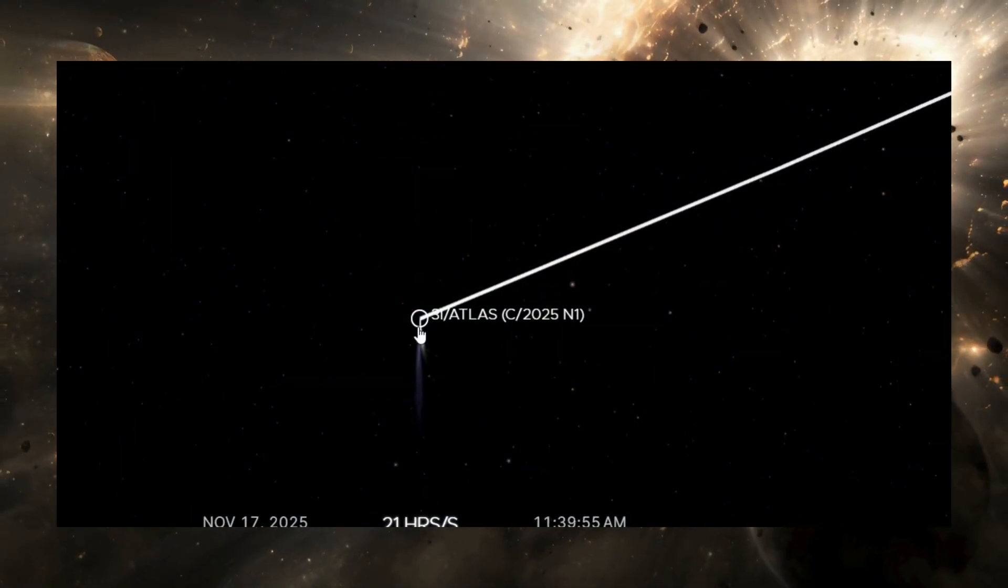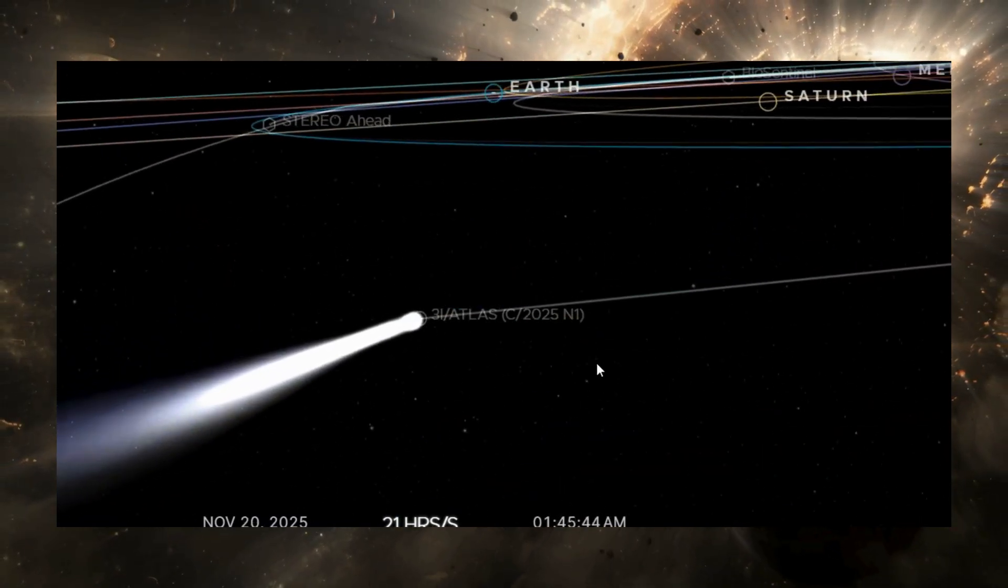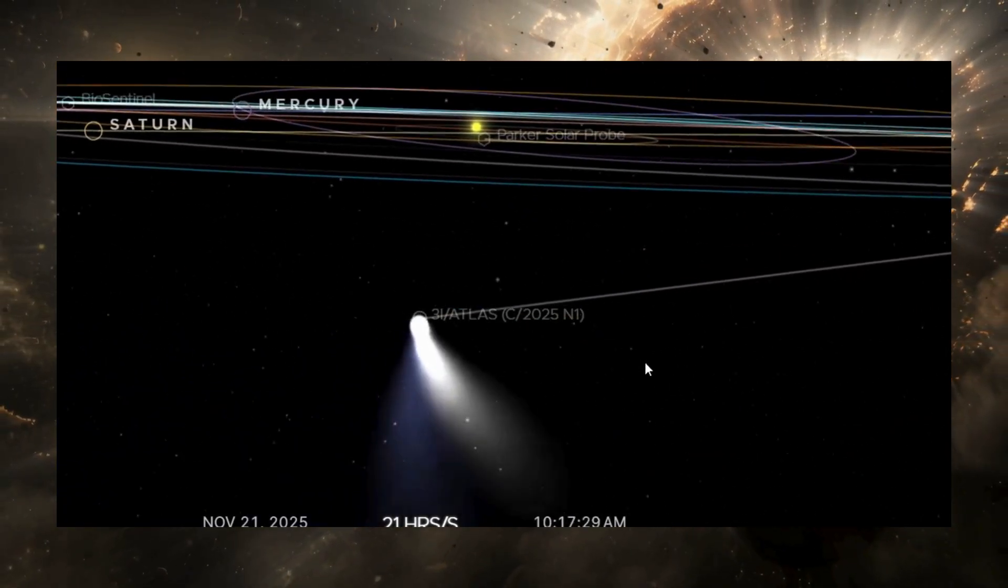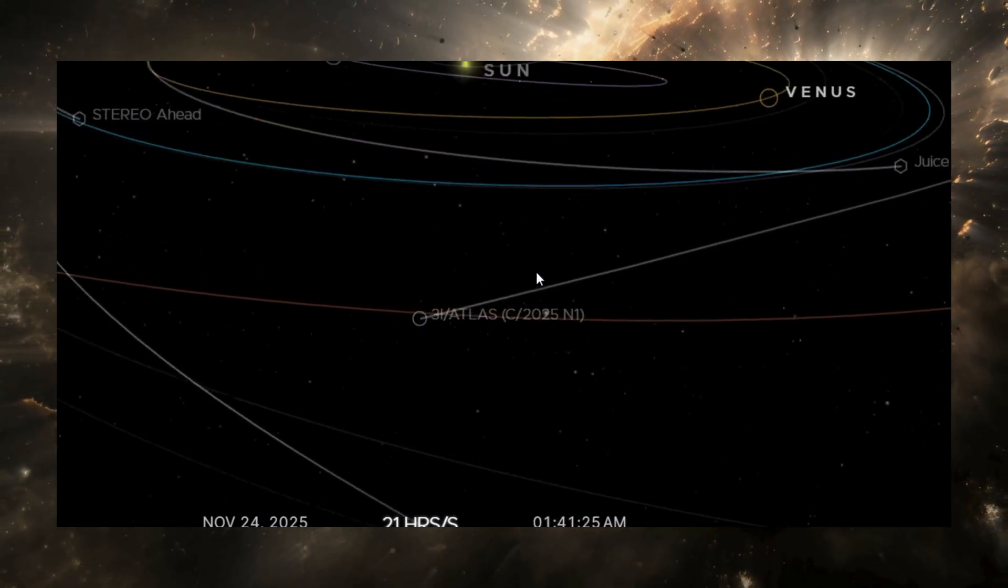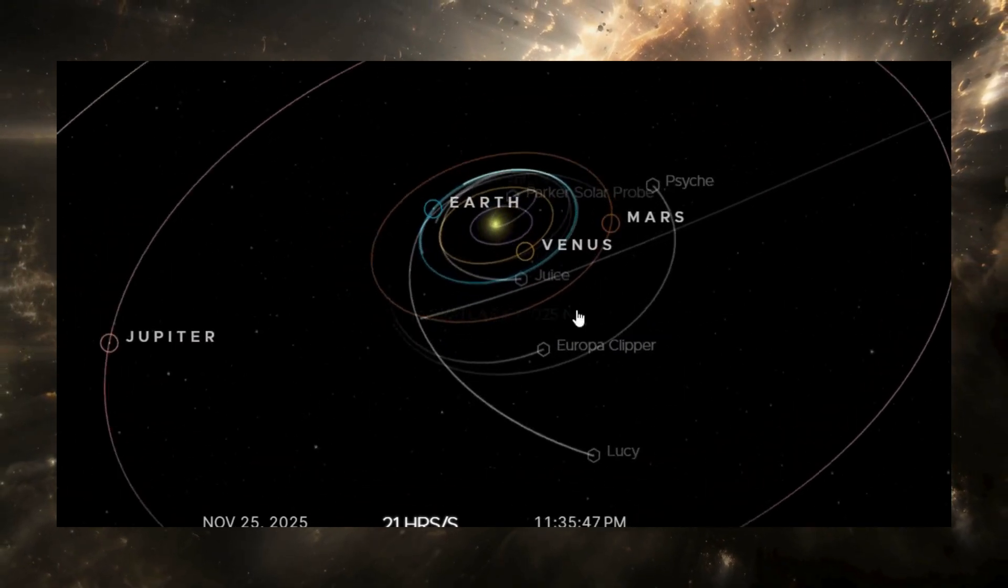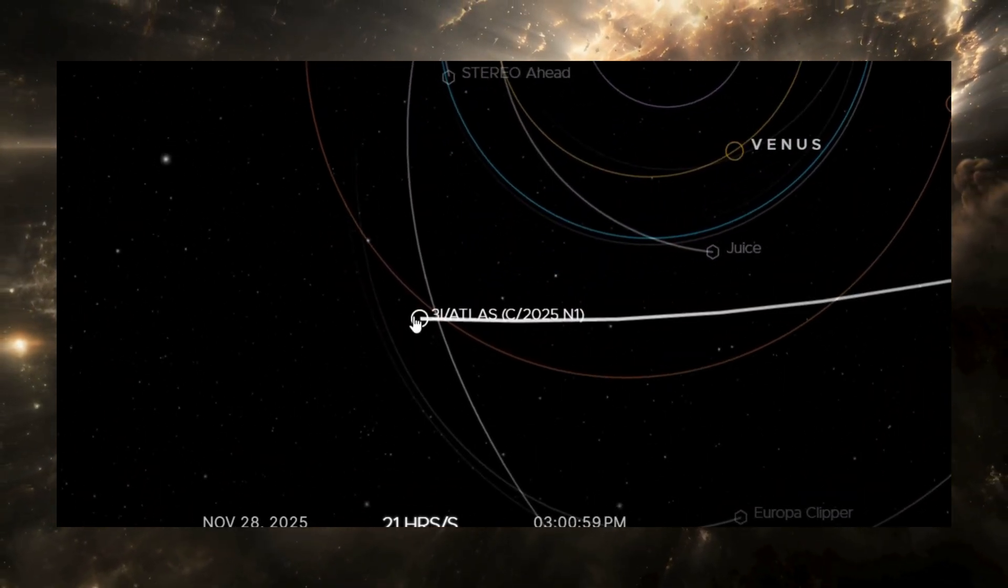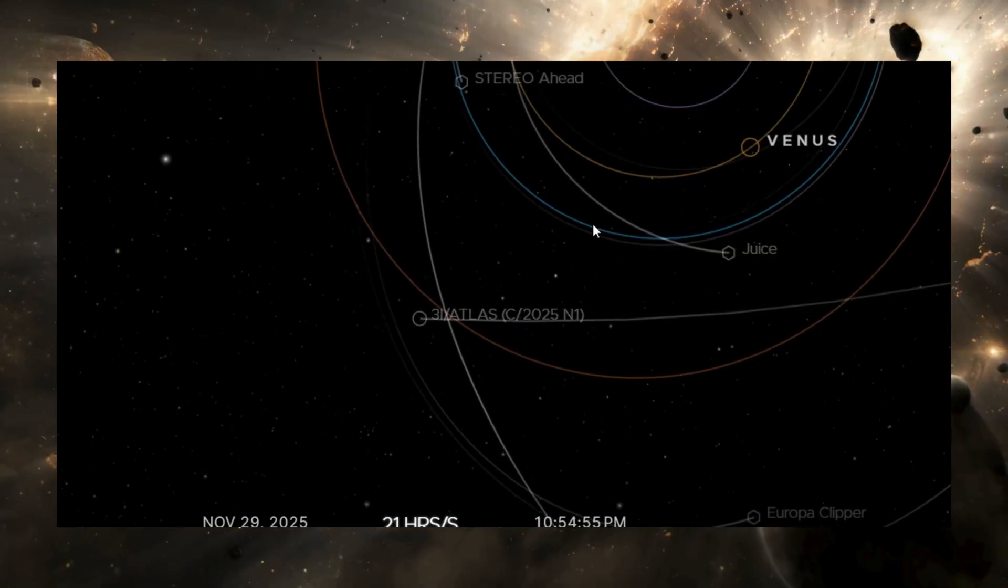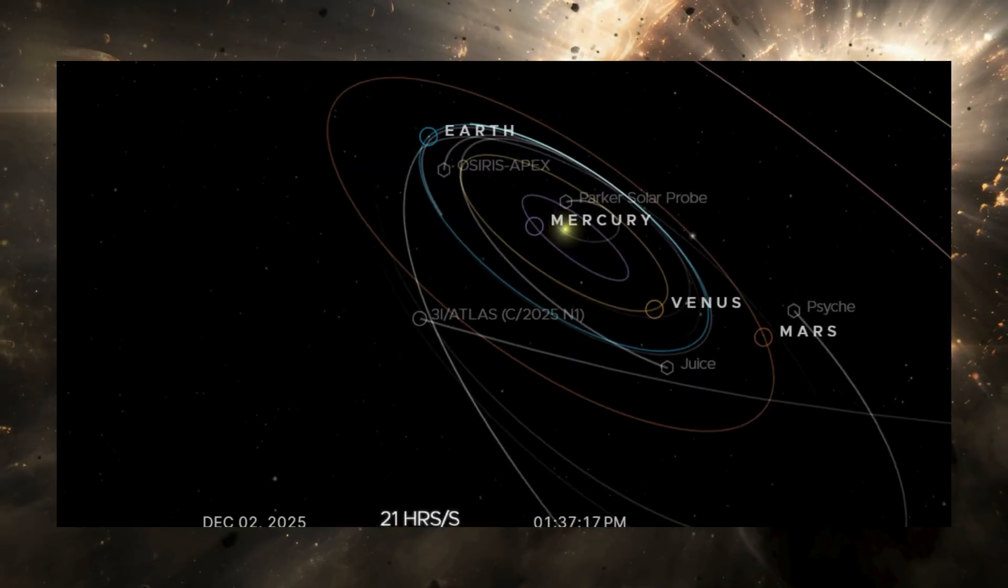Explanation number four: Artificial propulsion. This is Avi Loeb's controversial hypothesis. He argues that the non-gravitational acceleration may represent some kind of propulsion system, something that intentionally adjusted 3i Atlas's path so it would intersect Jupiter's hill radius. Maybe to deploy instruments. Maybe to use Jupiter for a slingshot maneuver. Or maybe for something we haven't even thought of.